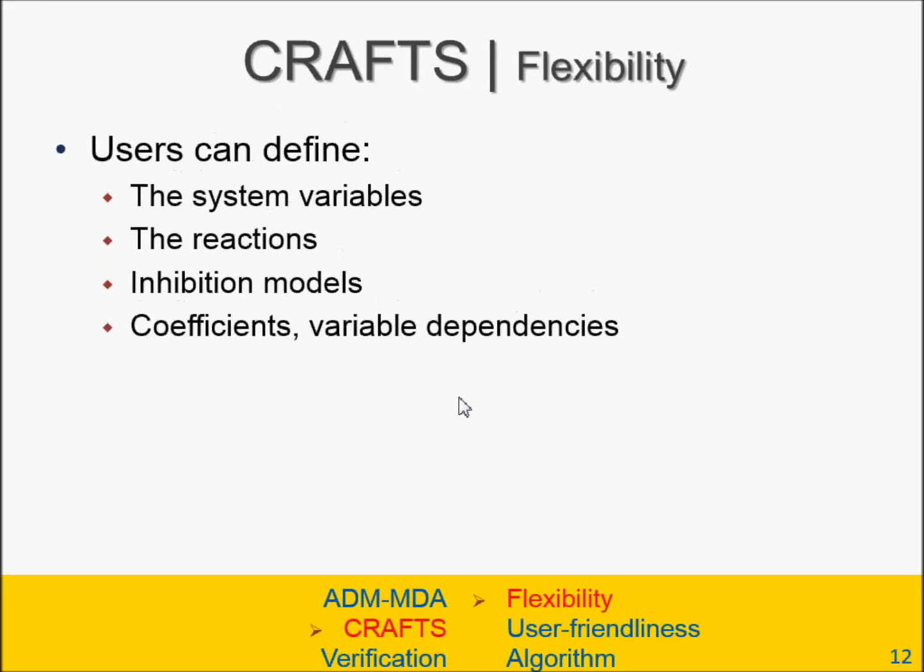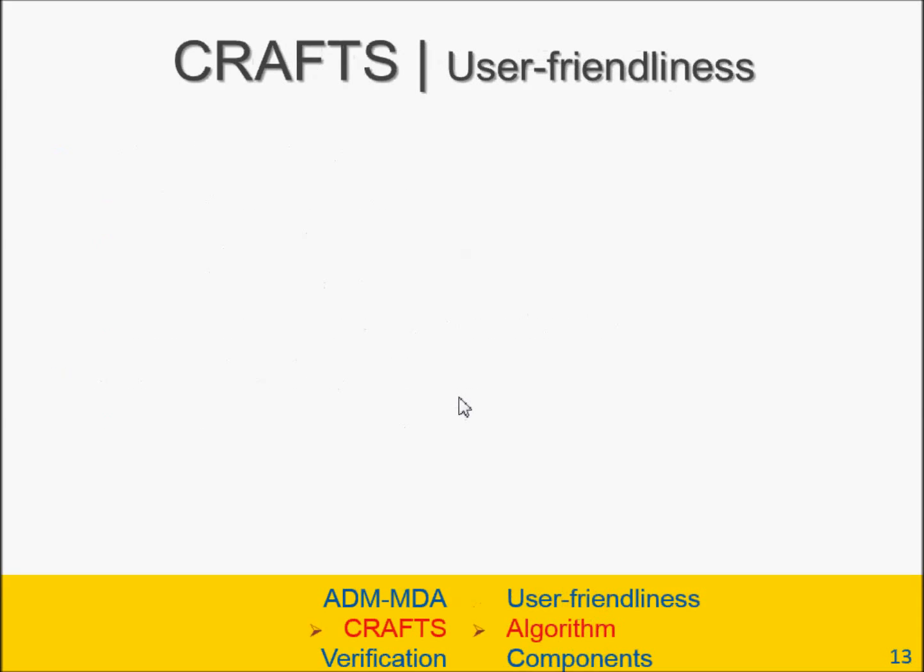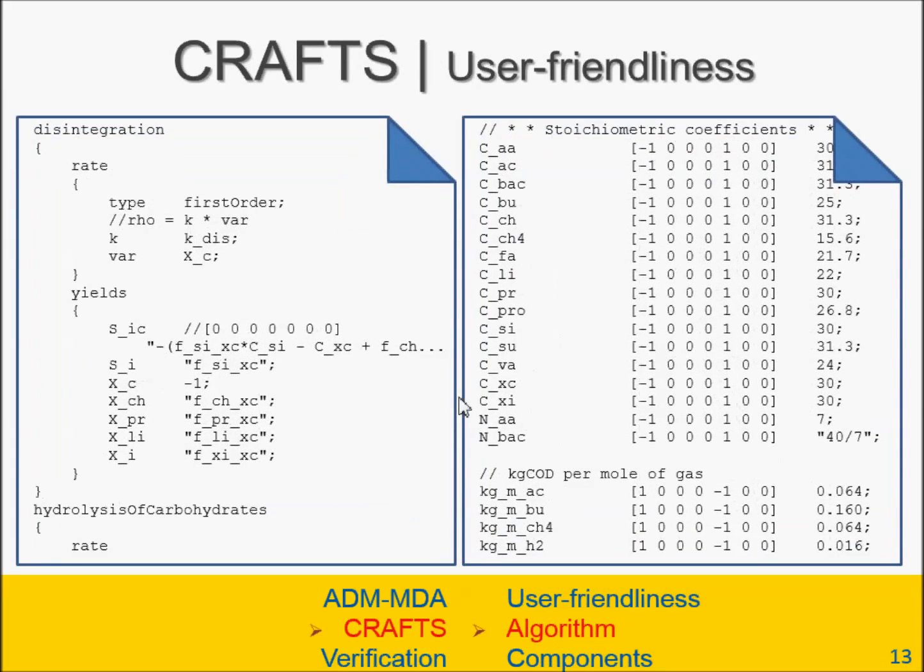And I've achieved the flexibility required. Users can define the system variables, the reactions, the inhibition models, coefficients, and even variable dependencies, straight up through text files with no programming skills whatsoever. They can also design the custom DAE algorithms, and I bring those in using user defined functions and function hooks, similar to how Fluent works. Just having a look at the user friendliness, as I said, you don't need programming skills for most of this. So you can see it's all text file inputs. On the left side you see some reactions defined there, and on the right side you see some coefficients. So it's all text based.